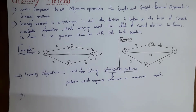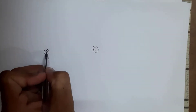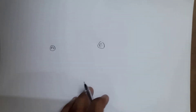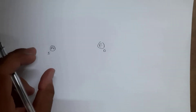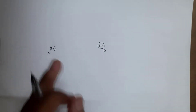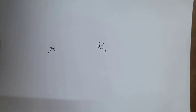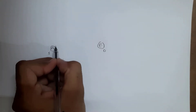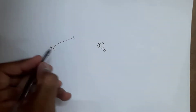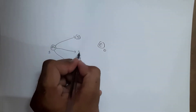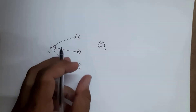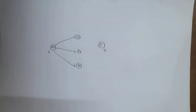I will give one example so that you can clearly understand this. There are two nodes — node A and node E. I want to travel from source to destination in the shortest distance. There are three routes: from A to B, A to C, and A to D — three ways to travel from source to destination.